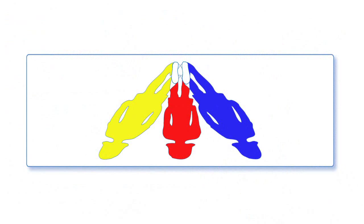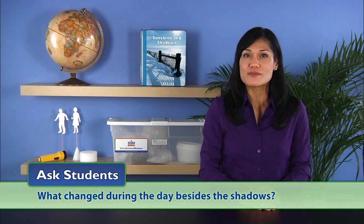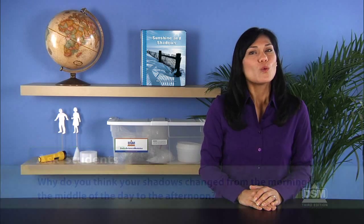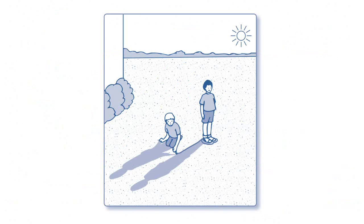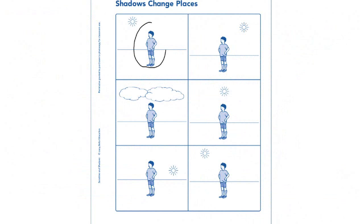Remind students that they already noticed that their shadows changed during the day. Ask students, what changed during the day besides the shadows? Students should reply that the sun's place in the sky also changed. Then ask, why do you think your shadows changed from the morning to the middle of the day to the afternoon? Students should be able to conclude that the shadows moved and changed because the sun's position in the sky changed. Next, distribute a copy of Activity Sheet 4 to each team and ask students to circle two pictures where the boy on the sheet has the same shadow. As you review the students' answers, make sure students understand that the shadows in the other four pictures would look different because the sun is in different places in the sky.